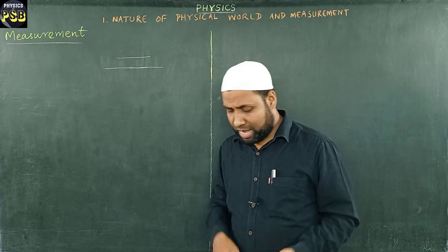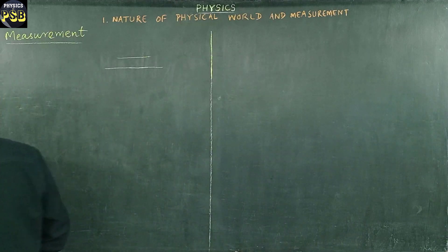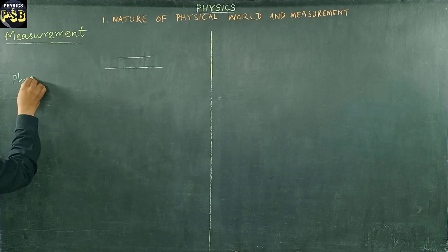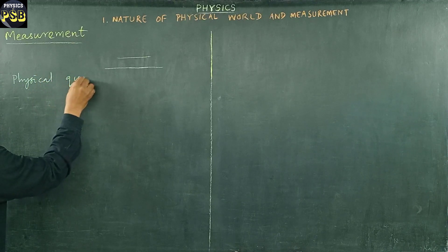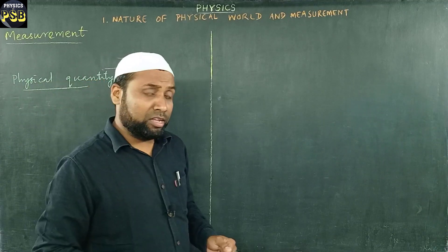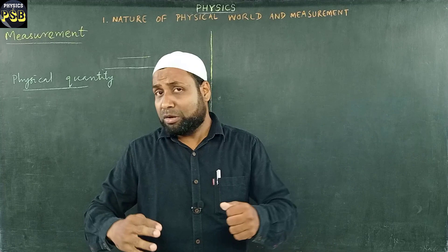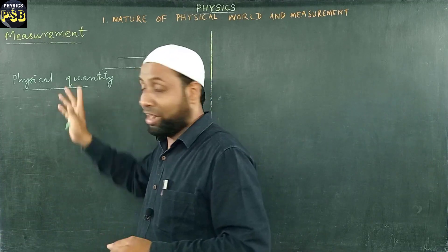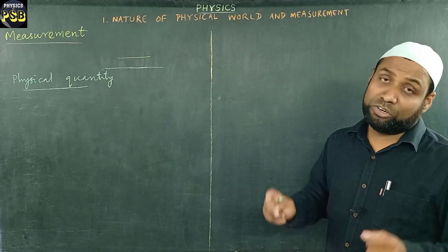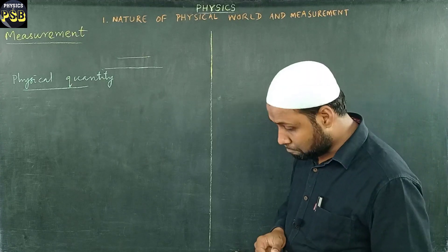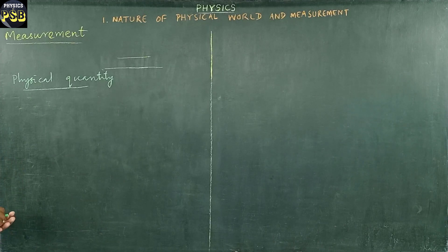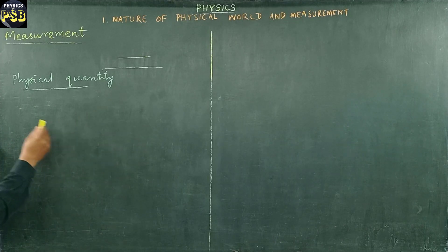Now, what is a physical quantity? Physical quantity refers to any quality which can be measured. If you can measure a quality, then we call that quality a physical quantity. We classify physical quantities into two: one is fundamental quantity and the other is derived quantity.